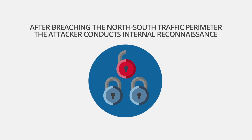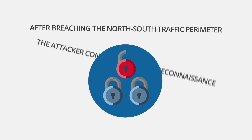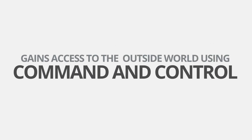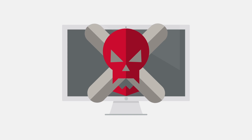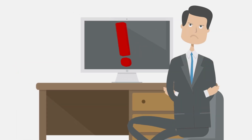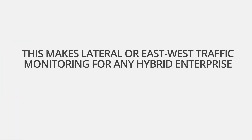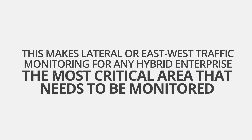After breaching the north-south traffic perimeter, the attacker conducts internal reconnaissance, gains access to the outside world using command and control, and then executes its objective — exfiltration of valuable data or intellectual property, or bringing down a mission-critical service — in a stealth manner by moving laterally within the data center. This makes lateral or east-west traffic monitoring for any hybrid enterprise the most critical area that needs to be monitored.